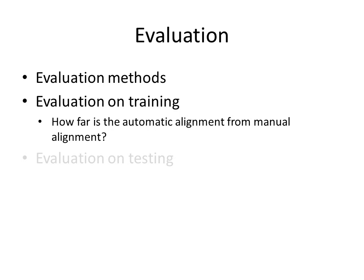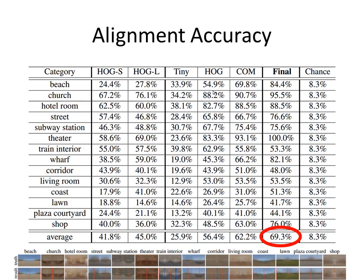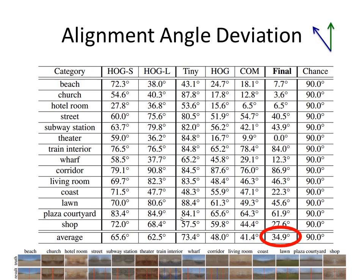We have two outcomes to evaluate: the alignment and the viewpoint prediction. In the training phase, we evaluate how well our automatic alignment compares to manual panorama alignment. The alignment can be evaluated using accuracy or angular deviation. In this table, we compare the accuracy of our main algorithm to some alternate algorithms implemented for comparison purposes. Overall, our algorithm performs the best. We can also measure performance based on the average angle deviation, and again our algorithm outperforms the other methods.